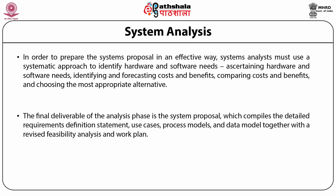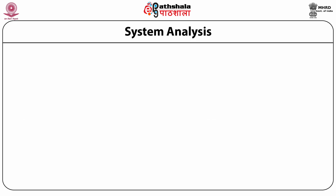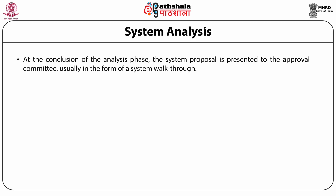The system proposal compiles the detailed requirement definition statement, the use cases, the process models, and the data model, all together with the revised feasibility analysis and the work plan. At the conclusion of the analysis phase, the system proposal is presented to the approval committee, usually in the form of a system walkthrough.